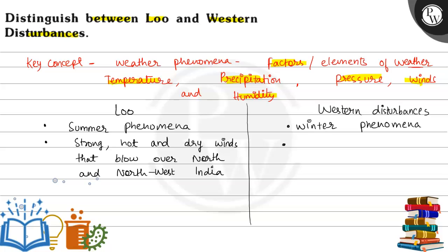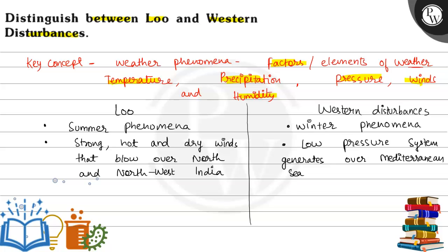If we talk about Western Disturbances, this is a low pressure system which generates over the Mediterranean Sea. They come to India along with the jet stream.